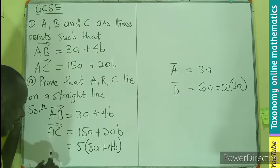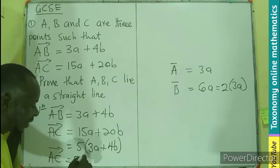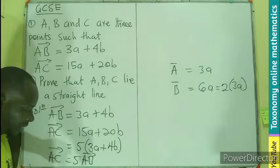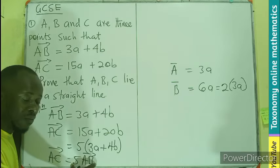So, I can say that vector AC is equal to 5 times vector AB. You can see that vector AC is having a multiple of vector AB.